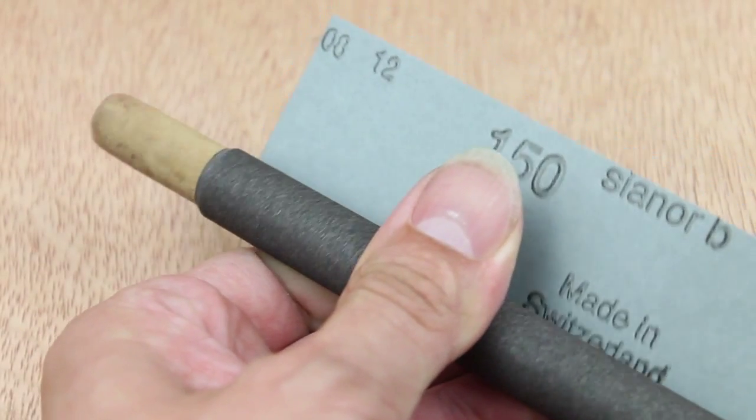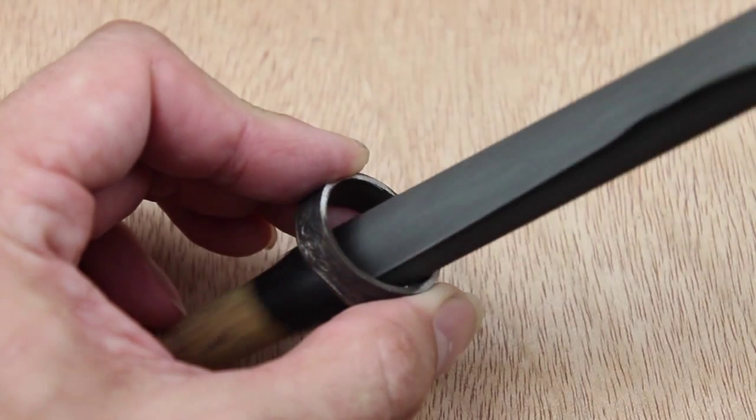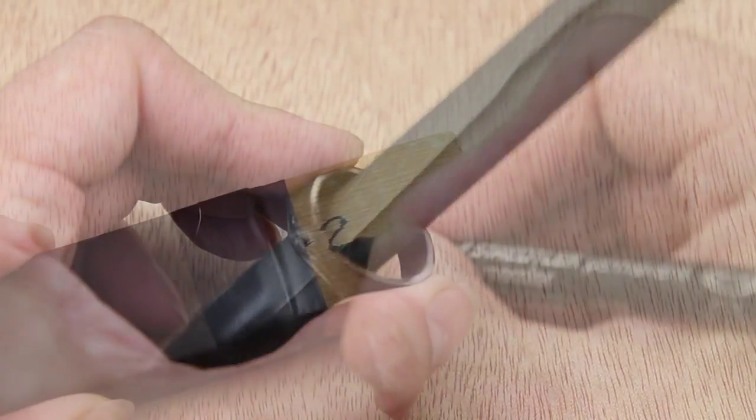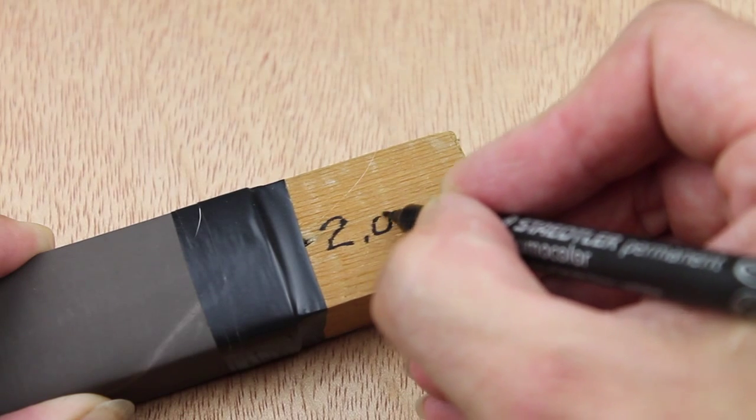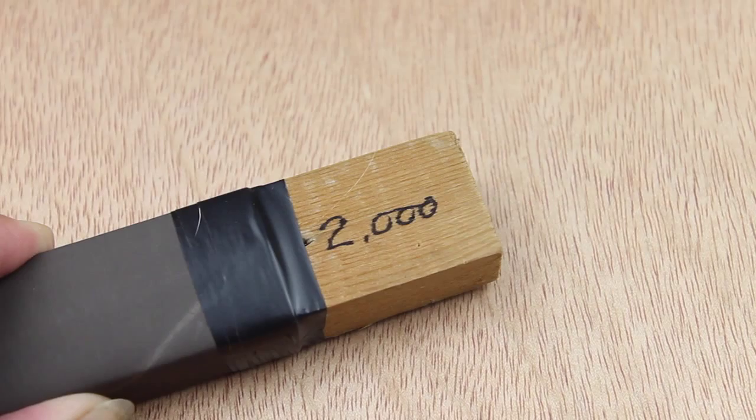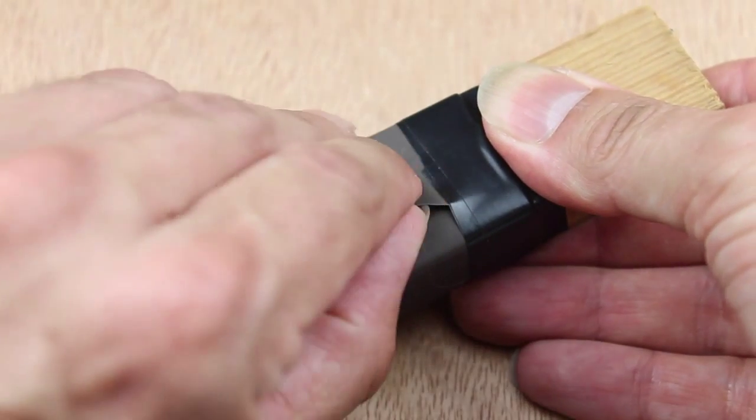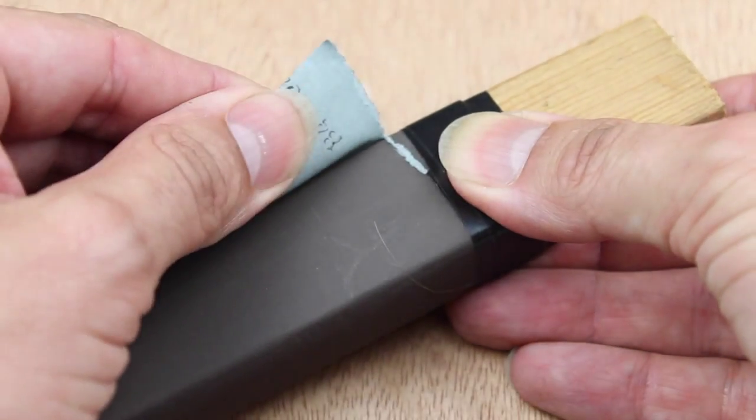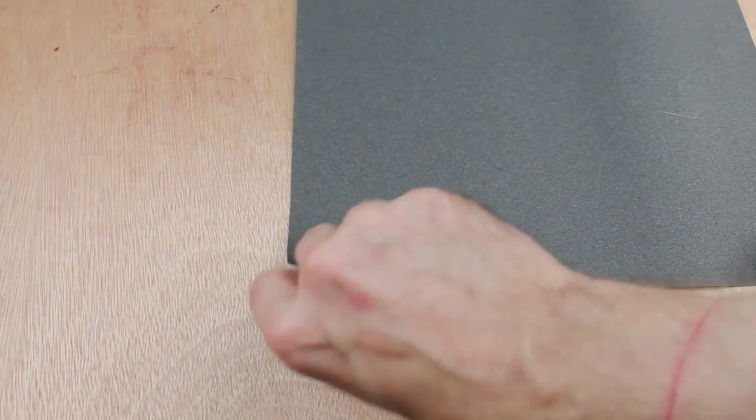Alternatively, if you use a piece of round dowel, these are great for the inside of rings. And a top tip here: write on the end of your stick the grit, or you can even color-code them. When the paper gets worn down, all you do is just tear a layer off and continue.